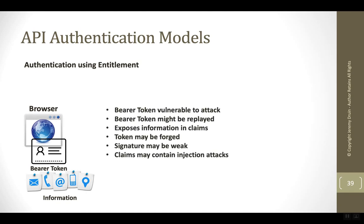In this model, we have to be careful about the bearer tokens — they are vulnerable to attack if not implemented correctly. They might be replayed, so the initiated-at time and the expiration time have to be reasonably short and enforced. There can also be information exposed in the claim, since the client has the bearer token in their possession and can read it. The token could also be forged, so there must be strong signatures enforced by the API. The signatures themselves can be weak using password-based signature schemes like HS256, where if anyone figures out the shared password, they would be able to forge the token.